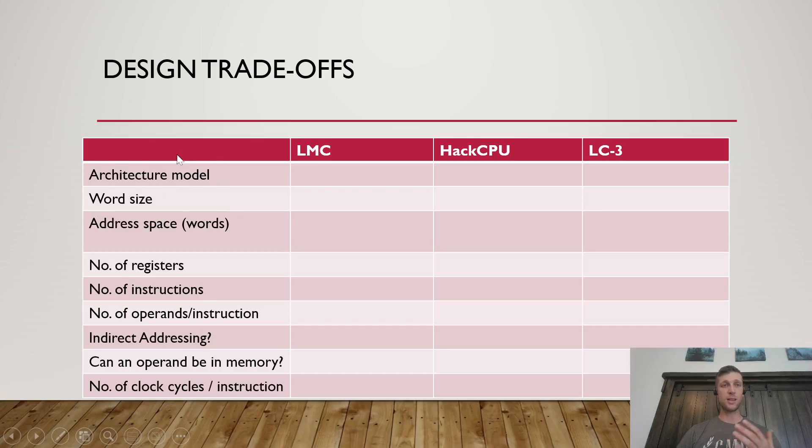You could imagine that they might be similar or different in terms of their architectural model, whether von Neumann or Harvard or something else. What's the word size for the processor? So what's the size of data that it typically operates on? I'm not going to go over these numbers in this presentation because I ask you to do this in the must-do exercise. The only thing I think I'll do is specify or sort of elaborate on these two rows right here because these can be a little confusing.